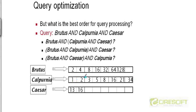If we take the Calpurnia list and intersect it with some other list, what guarantees can we provide about the length of the answer list? Well, Calpurnia has eight elements, so we can say that the answer list will have a size less than or equal to eight. But if in one scenario the answer list has a size of eight and in the other case it has a size of two, and if that answer list is going to serve as an intermediate list in the processing of a larger query, then when we take the intersection of that answer list with some other postings list, we may end up doing more work with the answer list that is larger.